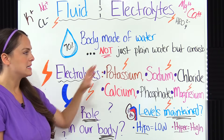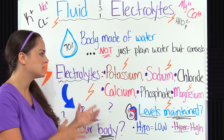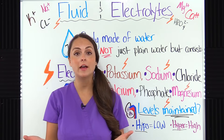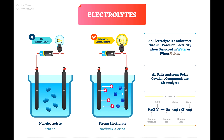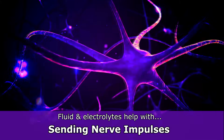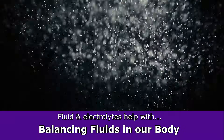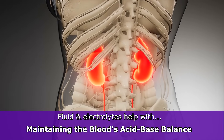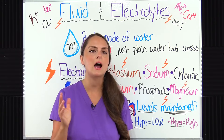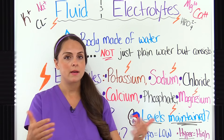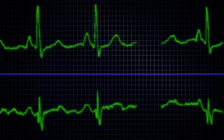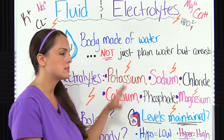So what are electrolytes? We're going to be talking about six main ones: potassium, sodium, chloride, calcium, phosphate, and magnesium. These are substances that once they enter the body and are dissolved in water — hence our blood — they actually produce an electrical charge and become ions. This is very important with electrical signaling in our body. Electrolytes help with contraction of muscles, sending nerve impulses, creating bones, balancing the fluids in our body via osmosis, and maintaining the blood's acid-base balance.